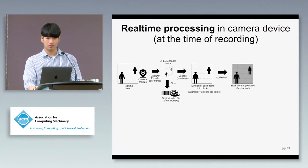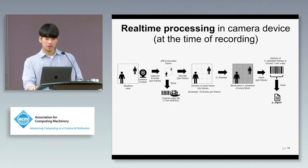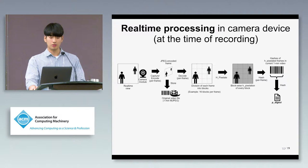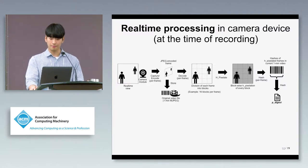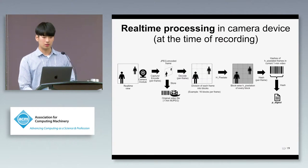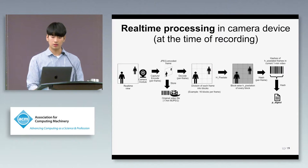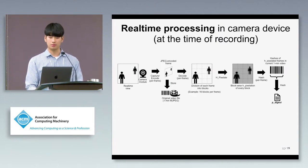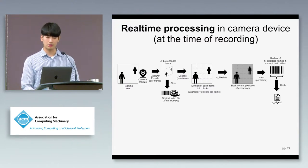Then block-level HPixelation is applied to every block. The resulting HPixelated frame is hashed, and the next real-time frame is read from the camera and processed. Upon recording of the current 1-minute video, the device generates a digest by collectively hashing all per-frame HPixelated hashes.